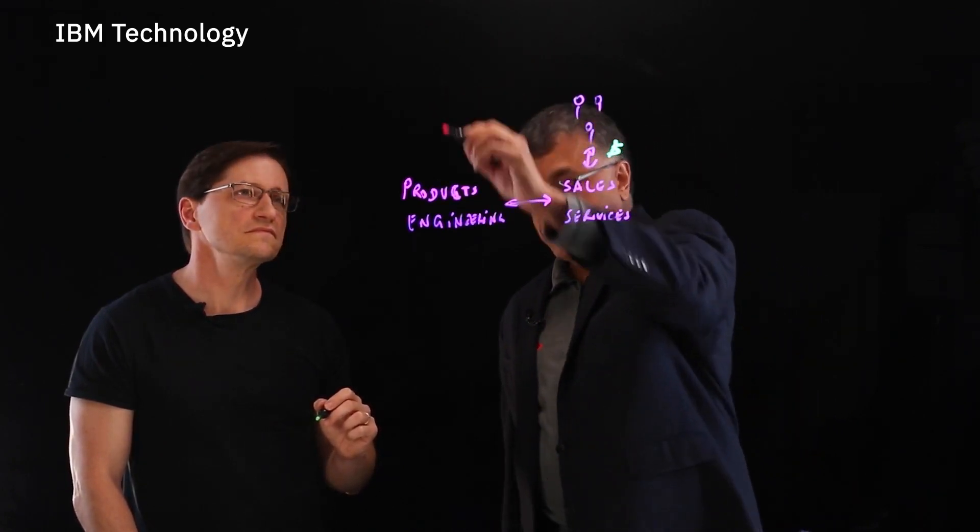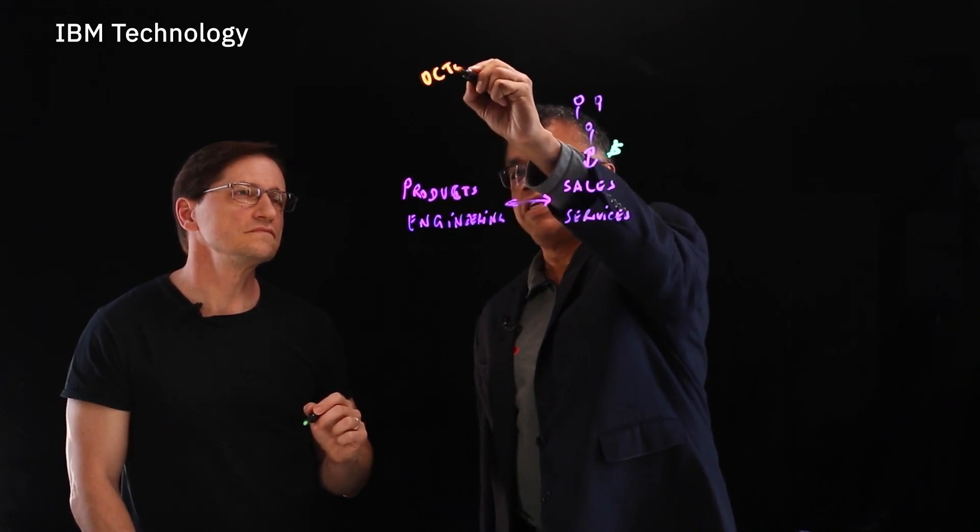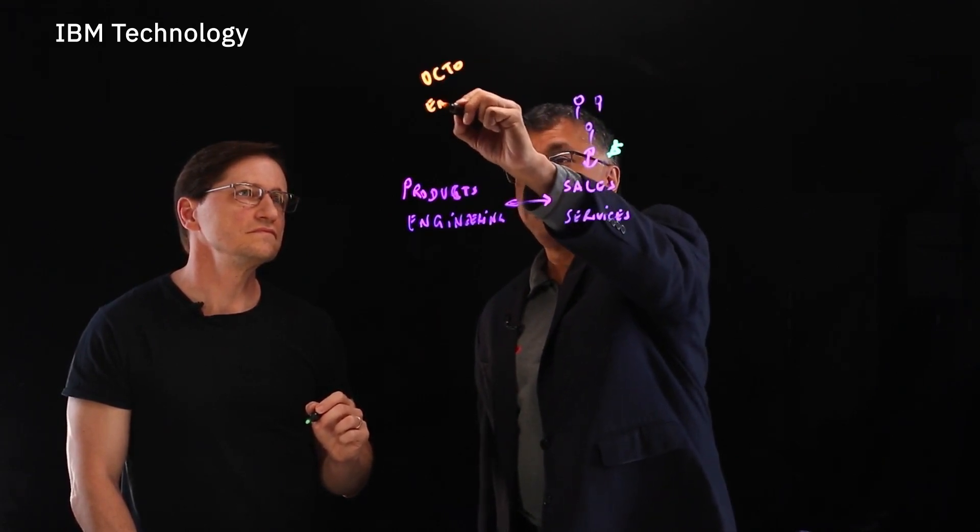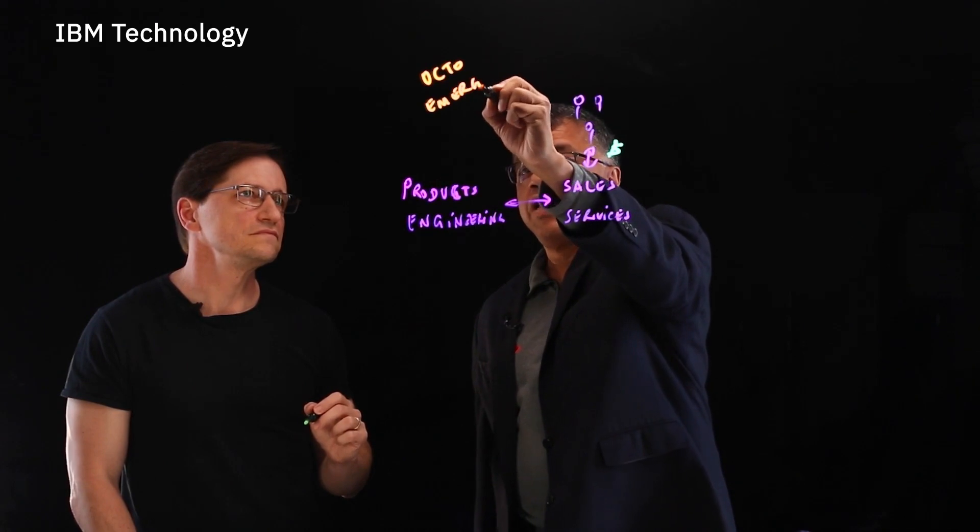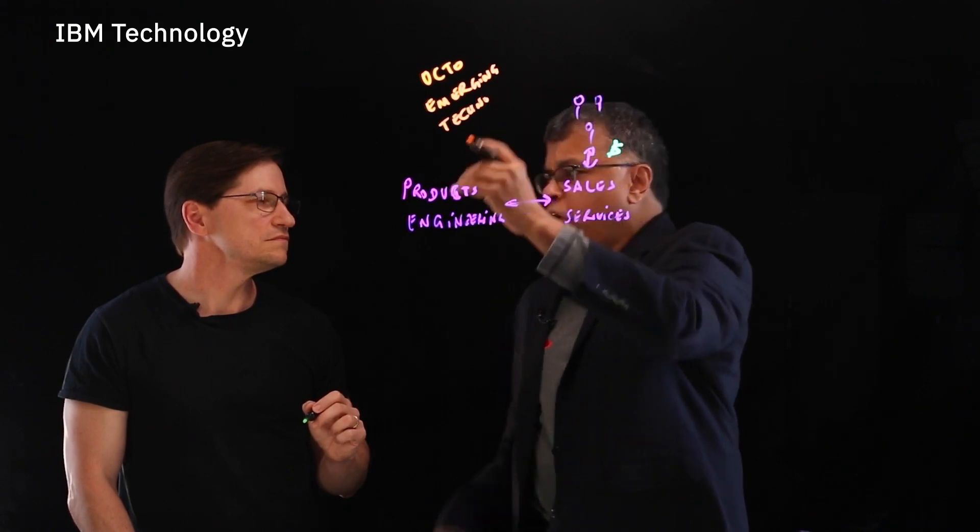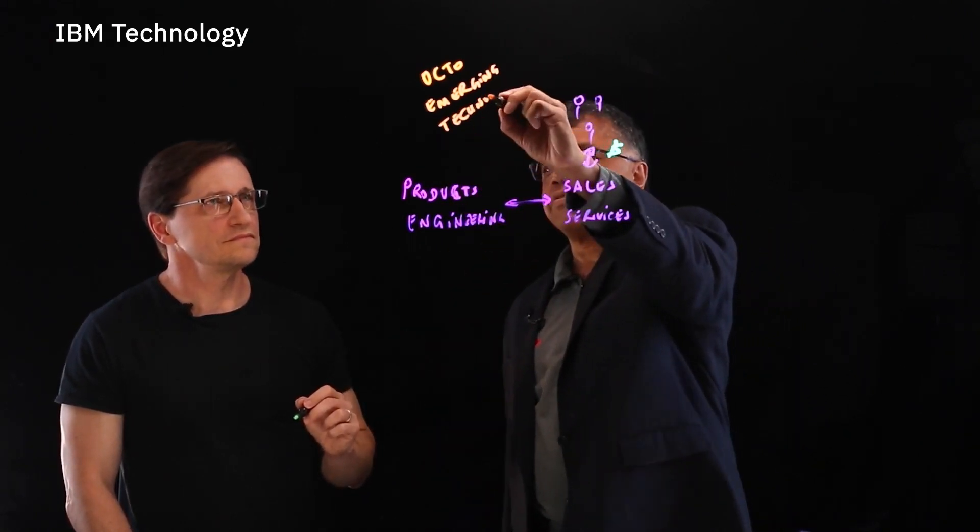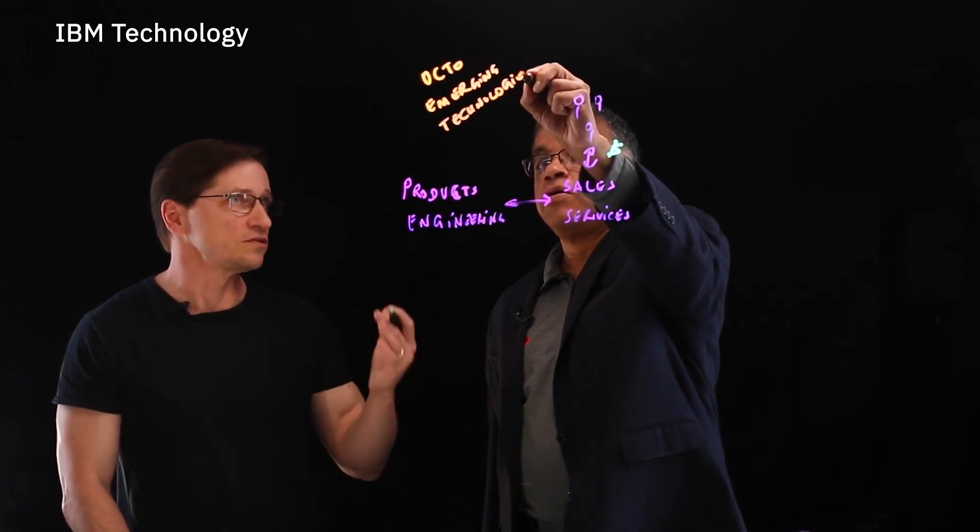That's where the CTO office comes in. The office of the CTO, one of the teams is actually all about emerging technologies. Now, you might remember, in the open source community at any point of time, how many projects do you think are going on in the community at any point, Dan? Take a guess. Within Red Hat or in general? In general.